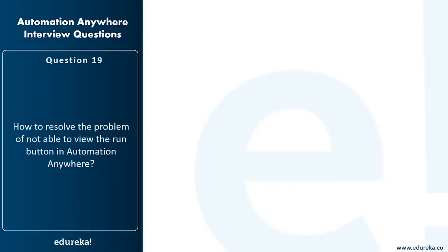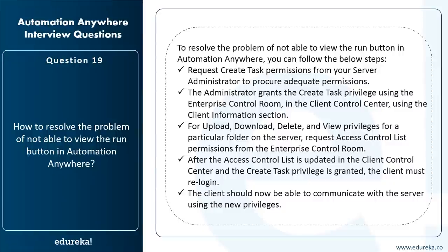How do you resolve the problem of not being able to view the Run button in Automation Anywhere? You can request Create Task permissions from your server administrator. The administrator grants the Create Task privilege using the Enterprise Control Room in the Client Control Center via the Client Information section. For upload, download, delete, and view privileges for a specific folder on the server, request Access Control List permissions from the Enterprise Control Room. After the ACL is updated and the Create Task privilege is granted, the client must re-login. The client should then be able to communicate with the server using the new privileges.